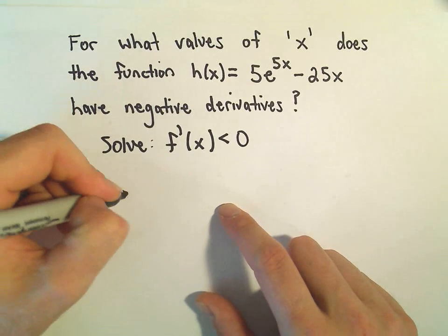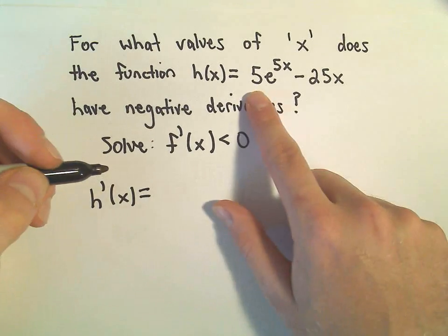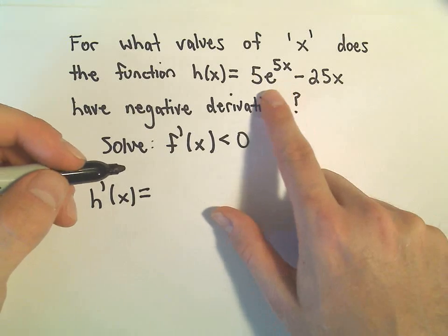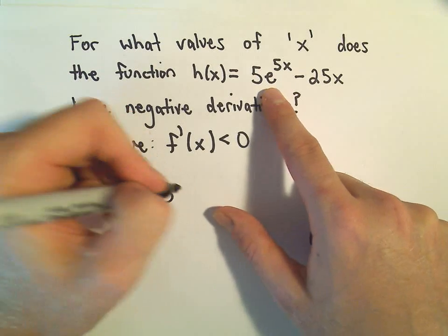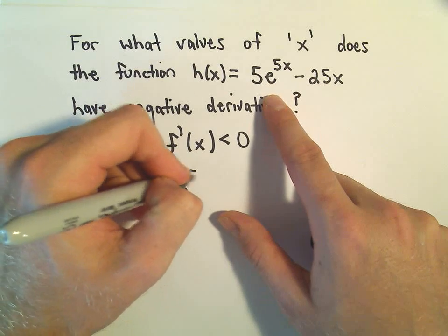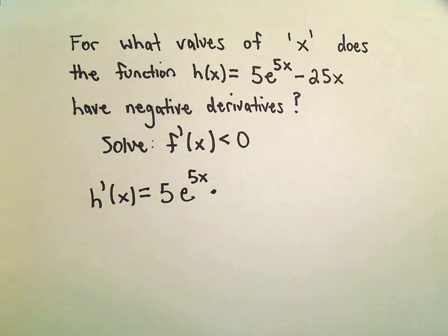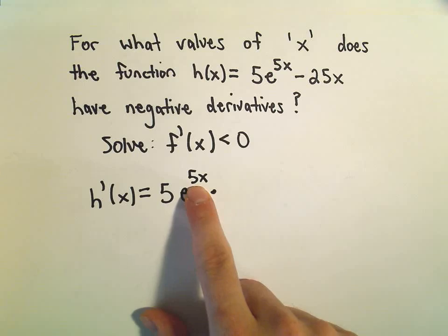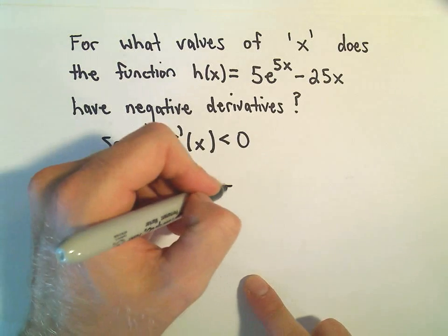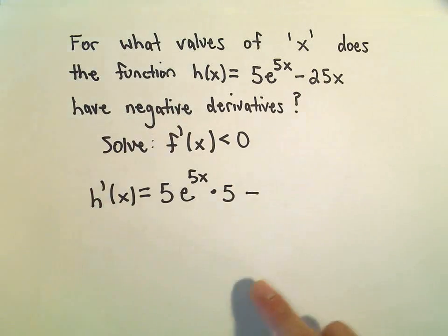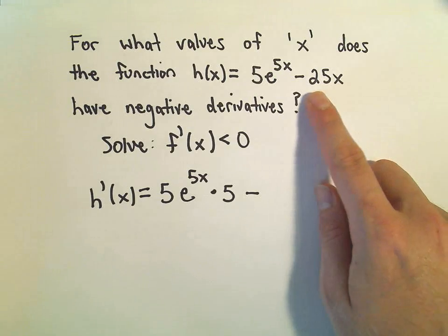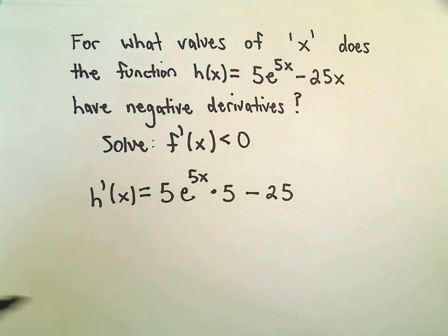To take the derivative of our function, we've got 5 times e to the 5x. The 5 just comes along, the derivative of e to the 5x just repeats itself. And then we have to take the derivative of the exponent. The derivative of 5x is just 5. And when we take the derivative of negative 25x, we'll just get negative 25.